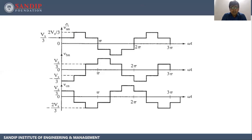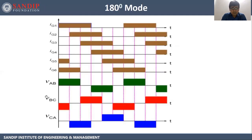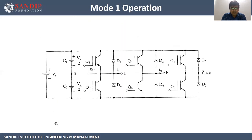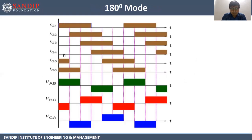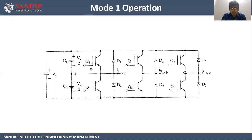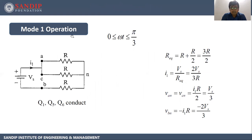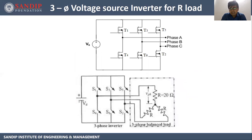This is the waveform for Van, Vbn, and Vcn. Van is the voltage of phase A with respect to neutral, Vbn is the voltage of phase B with respect to neutral, and Vcn is the voltage of phase C with respect to neutral. Vab is the voltage between phase A and phase B, Vbc between phase B and phase C, and Vca accordingly. In mode 1, thyristors 1, 5, and 6 are on. Looking at the main circuit, thyristors 1, 5, and 6 being on means phase A is connected to the positive of the input source.